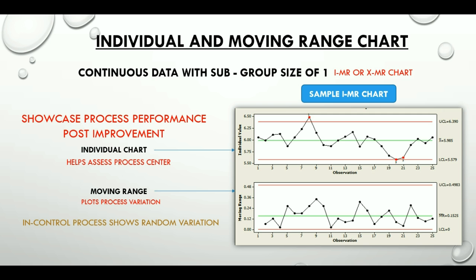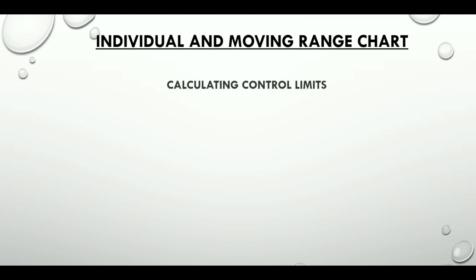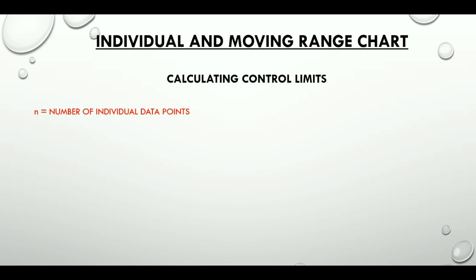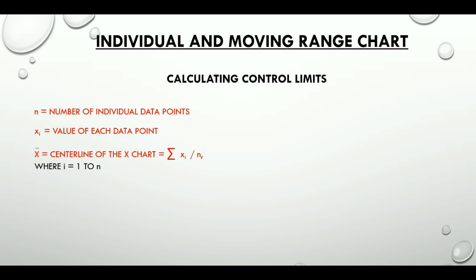Let's understand the control limits of an IMR chart. What we need here is N, the number of data points, and XI, the value of each data point. For example, if we have 10 data points — N equals 10 — numbered from 1 to 10 in sequence, then X4, the value of the fourth data point, would be 4. Similarly, the value of the seventh data point, X7, would be 7, and so on. The center line of the individual chart, the X chart, is the average or mean: X-bar equals the summation of XI divided by N, where I takes values from 1 to N.